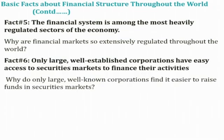Another fact: only large, well-established corporations have easy access to securities markets to finance their activities. Well-established firms like Coca-Cola, Microsoft, or Google can raise funds much more easily. When well-established companies issue IPOs, those offerings tend to be oversubscribed. So why do only large, well-known corporations find it easier to raise funds in securities markets?